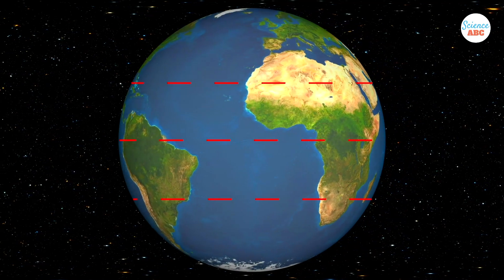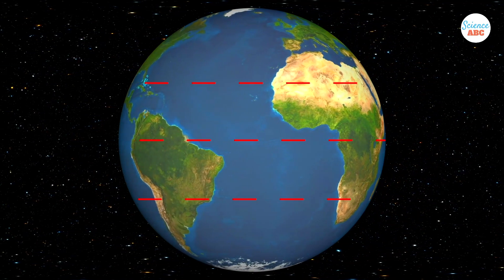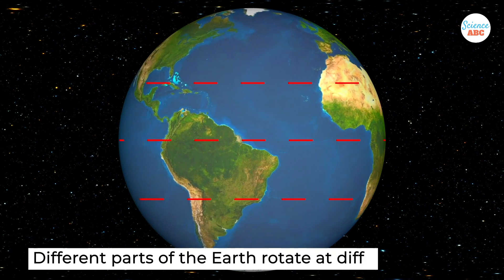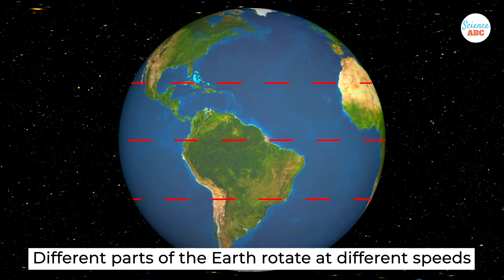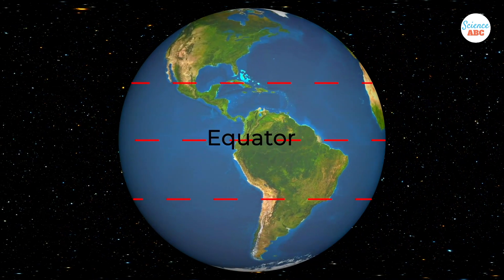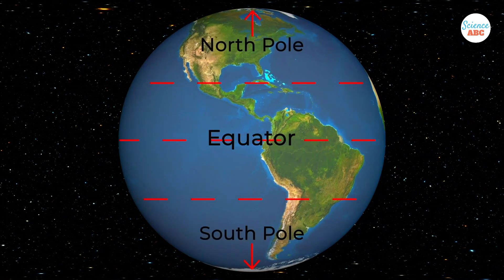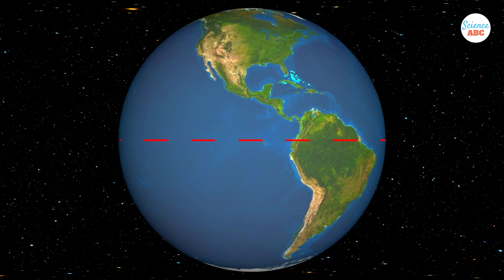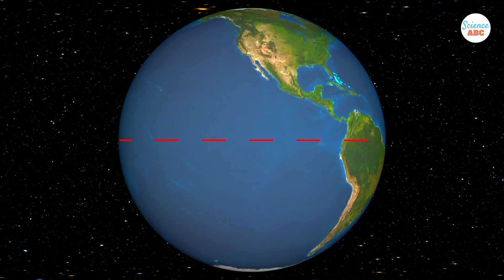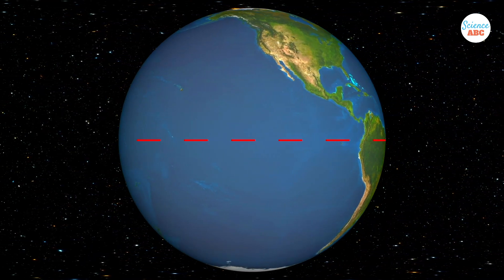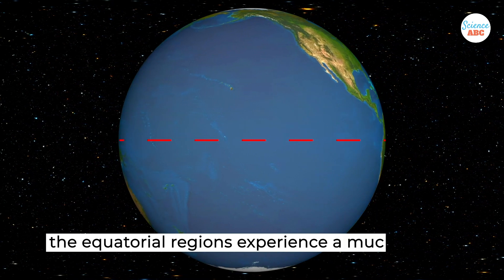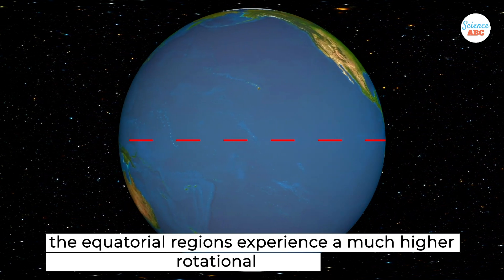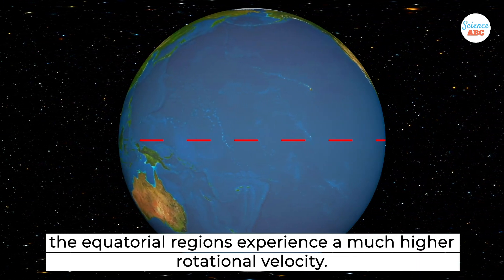The Coriolis effect comes into play because different parts of the Earth rotate at different speeds. Our planet rotates faster at the equator than it does at the poles — it's wider, or more technically, has a greater circumference at the equator. Therefore, in order to complete one rotation in 24 hours, the equatorial regions experience a much higher rotational velocity than other parts of the planet.